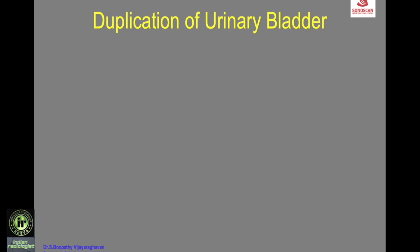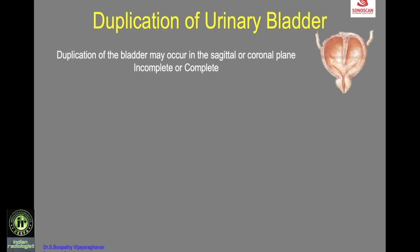The next anomaly is duplication of the urinary bladder, which may occur in the sagittal or coronal plane. In the sagittal plane it may be incomplete — appearing as a septum from the dome of the bladder — or complete, showing two separate bladders due to complete duplication of the bladder and urethra.